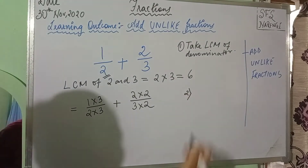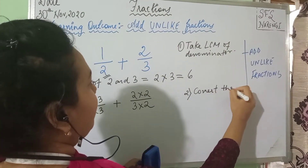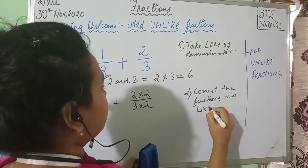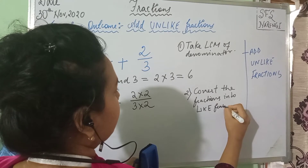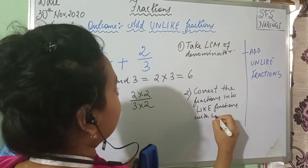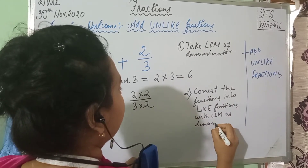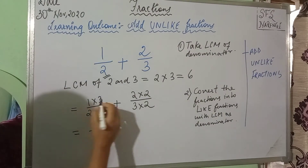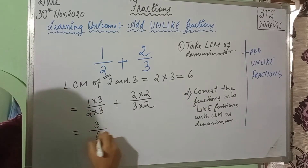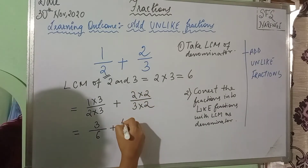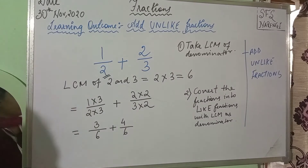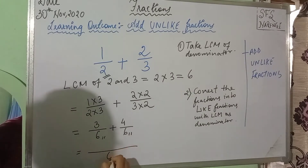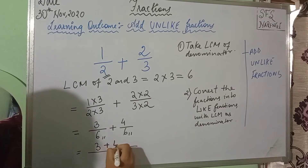We have to convert these fractions into like fractions with the same denominator. That is step 1. Step 2 is: convert the fractions into like fractions with LCM as the denominator. Since I am multiplying the denominator by 2, I will also multiply the numerator by 2. After that, all I have to do is multiply. So, 3 multiplied by 1 is 3, 3 multiplied by 2 is 6. And 2 multiplied by 2 is 4, 2 multiplied by 3 is 6. Since the denominators are the same, I can group them under the same denominator and then add the numerators.